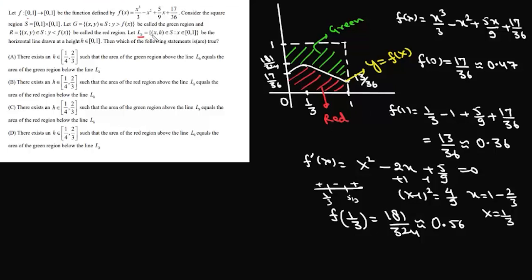It then says: let L(h) be a horizontal line drawn at height h, where h lies between 0 and 1. We need to determine which statements are true. The given range is h between 1/4 and 2/3. Since 1/4 = 0.25 < 0.36, the line L(1/4) starts below the minimum value of f, and L(2/3) at 0.66 is above the maximum value of f.